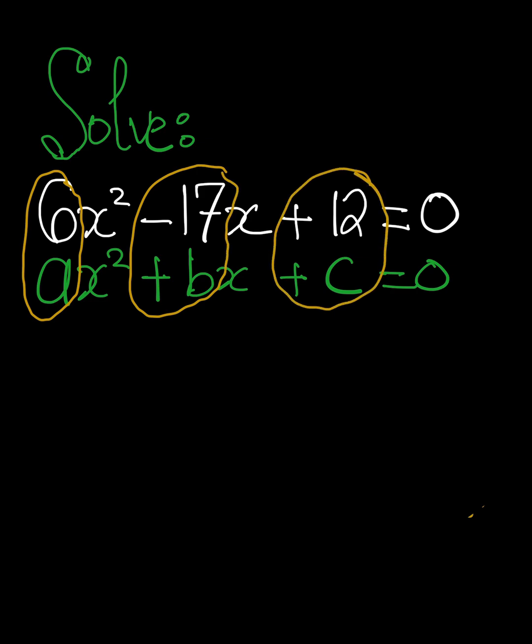So we're going to write them down. Our a here is 6, our b is negative 17, our c is 12.